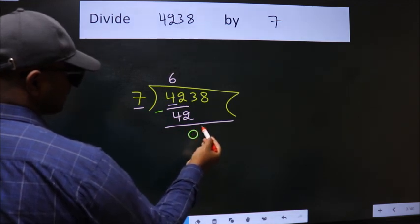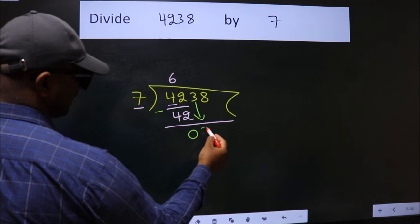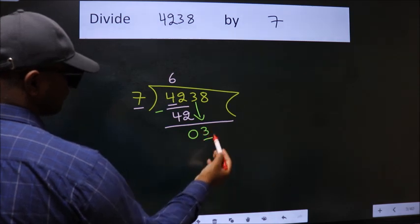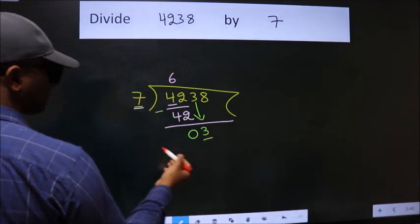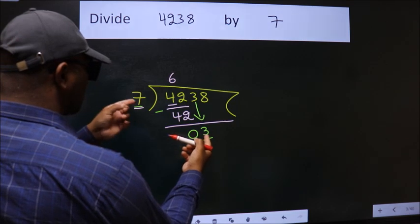After this, bring down the beside number. So, 3 down. Here we have 3. Here 7. 3 is smaller than 7.